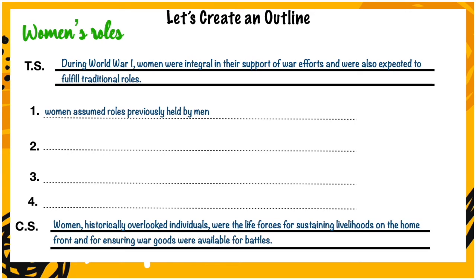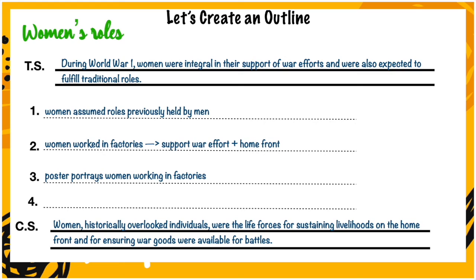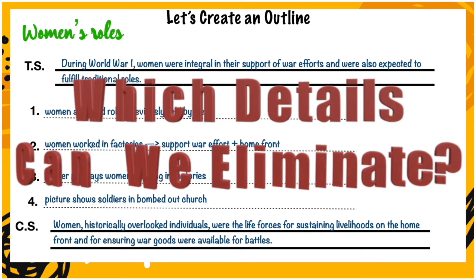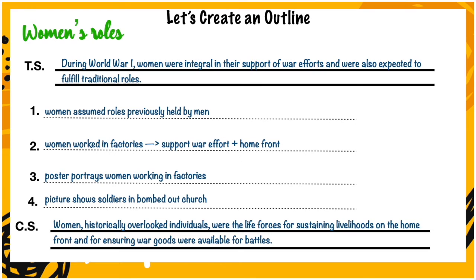Let's start with number one. Women assumed roles previously held by men. Women worked in factories and, as a result, they supported the war efforts and the home front. A poster portrays women working in factories. A picture shows soldiers in a bombed-out church. Which information is irrelevant to this paragraph? The picture that shows soldiers in a bombed-out church doesn't fit here. Maybe if the paragraph was talking about mass destruction during World War One that detail would work, but it doesn't fit here, so we would have to eliminate that.